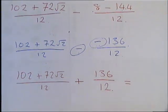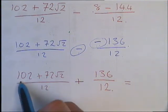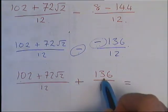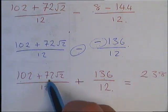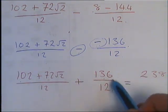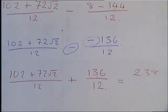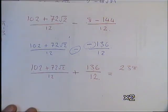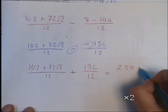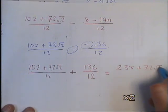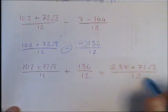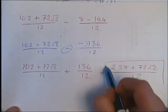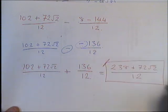So that is going to turn into 102 plus 72 root 2 over 12 plus 136 over 12. Which when we work that out we're just going to do 102 plus 136 to give us 238. 72 root 2 plus nothing is just going to give us plus 72 root 2. And we're still going to have our 12 on the bottom. And that is your answer.